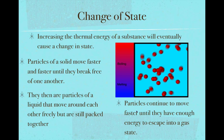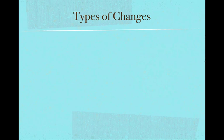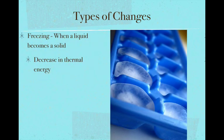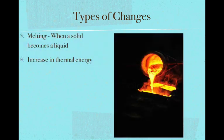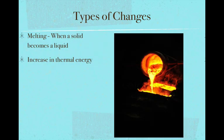The first type of change is freezing, where a liquid becomes a solid. You need to decrease the thermal energy of the substance, slowing the particles until they no longer move around one another freely. Another type of change is melting, where a solid becomes a liquid — we increase the thermal energy of the particles in a solid and it causes them to break free of one another and move around the container more.